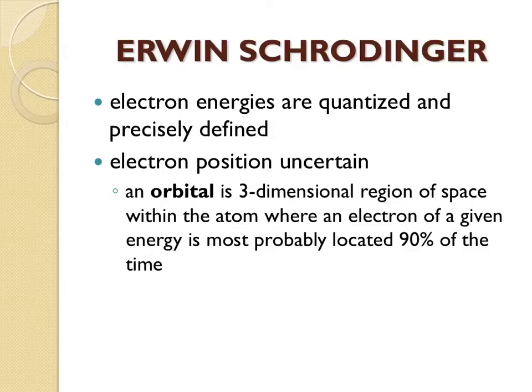However, instead of the orbit in the Bohr model, we have, in the quantum mechanical model, the orbital. That is because the location or position of the electron is uncertain, and we talk about an orbital being a three-dimensional region of space within an atom where an electron is probably located 90% of the time. So the position of the electron is uncertain, and we can only talk about its probability of being within a certain region of space within the atom.